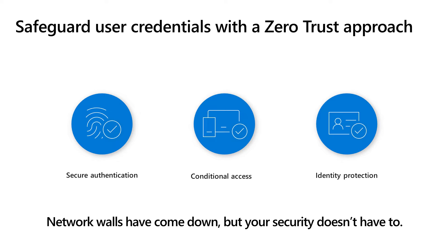With multi-factor authentication, you can have a number of elements that help you further authenticate — a push notification, an SMS message, a voice call, an OAuth token, or a code received through your mobile device using, say, the Microsoft Authenticator. This is great for authentication, preventing usernames and passwords from being stolen, because it's looking for that physical device or biometric — your face or fingerprint — that a hacker typically would not have.